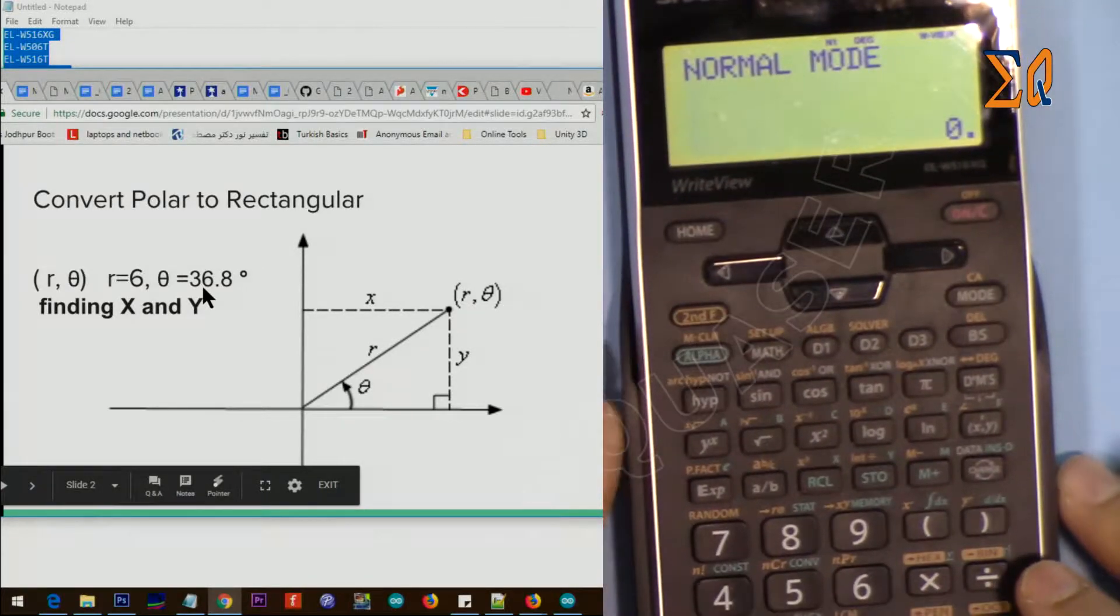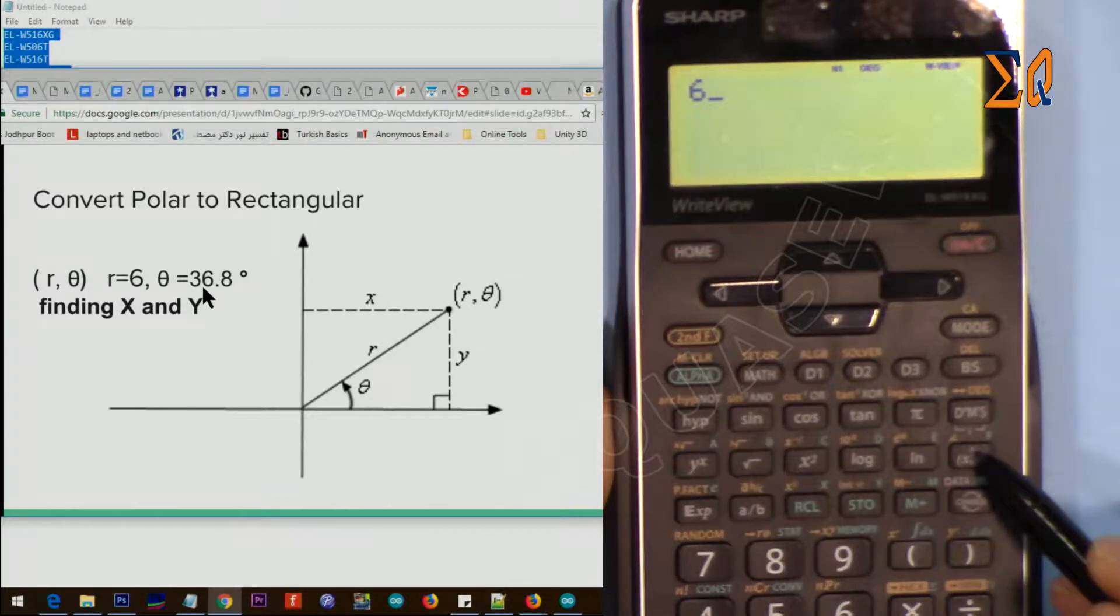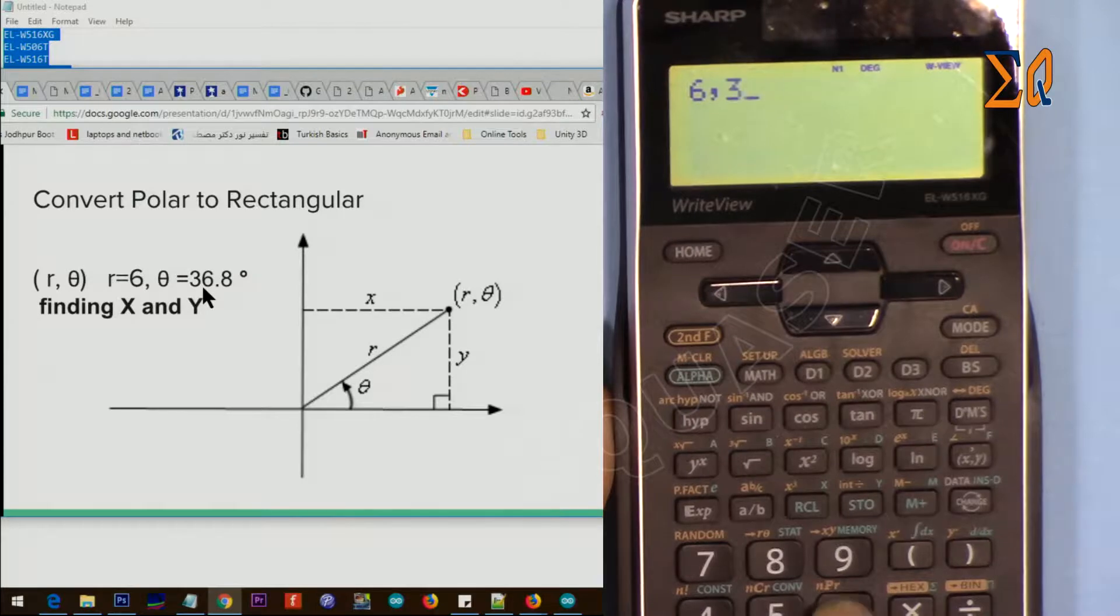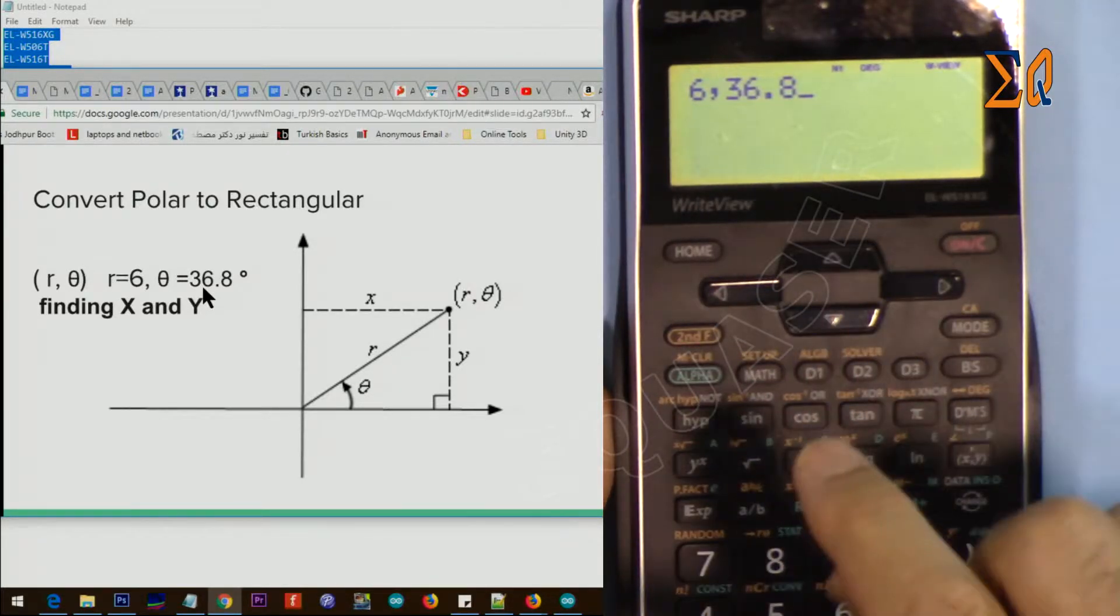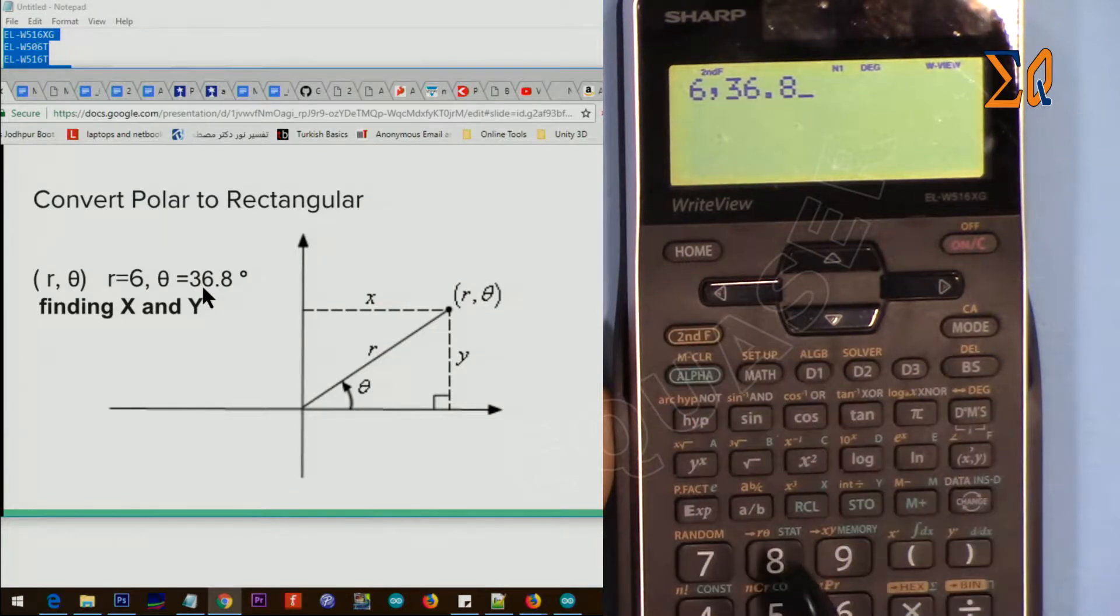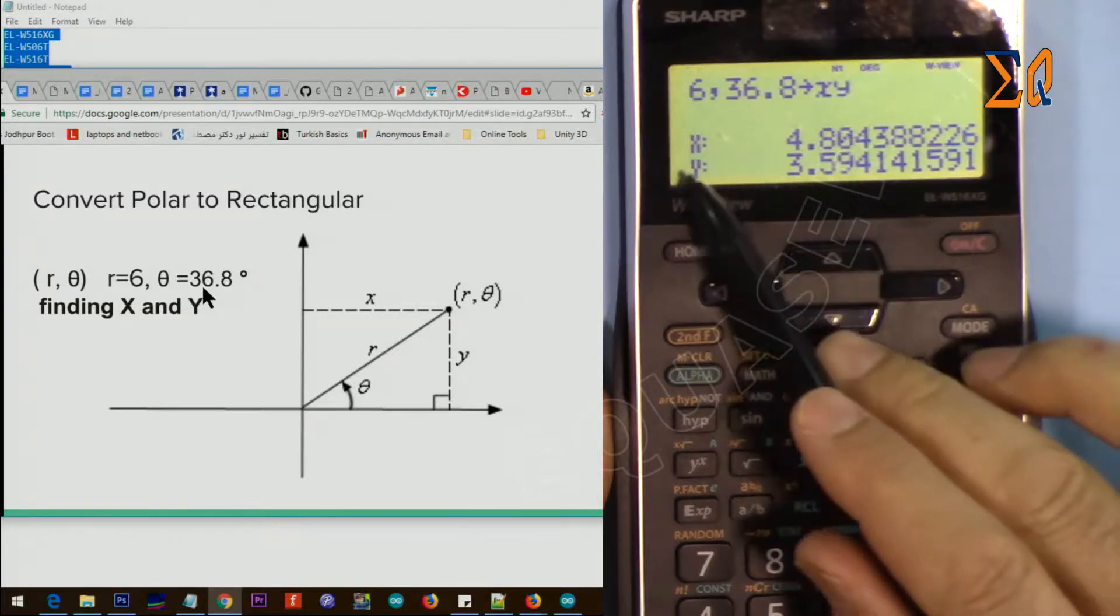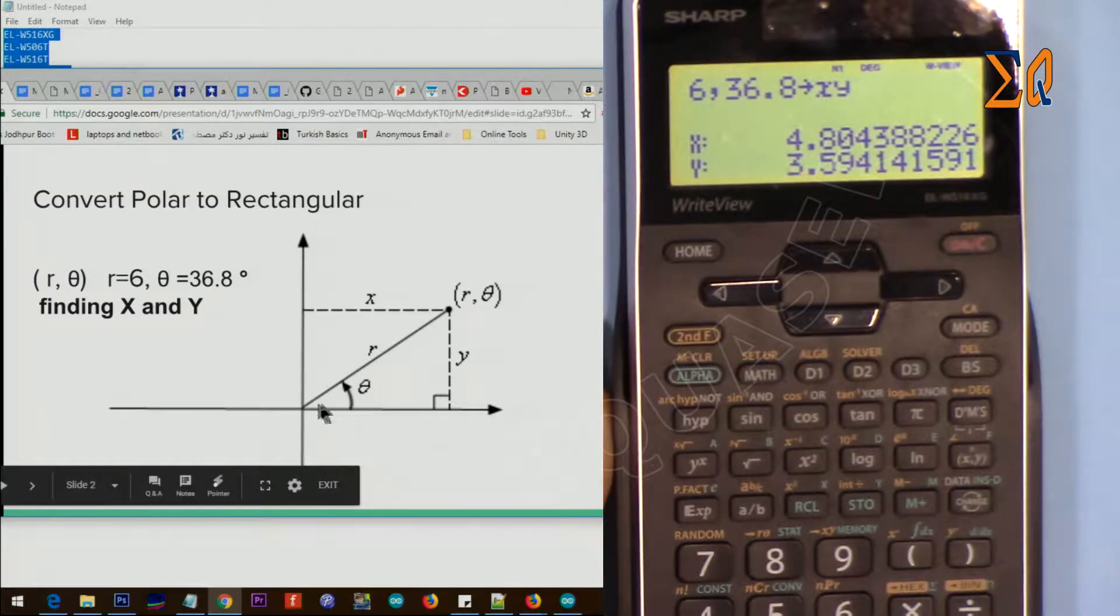So first, 6, and we press this button X and Y, and then comma. So that is comma, 36.8. Once we have it this way on the screen, press second function, and then here we want to convert it to X and Y. This nine.